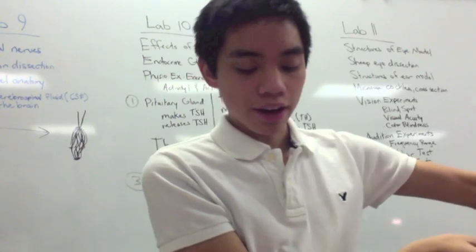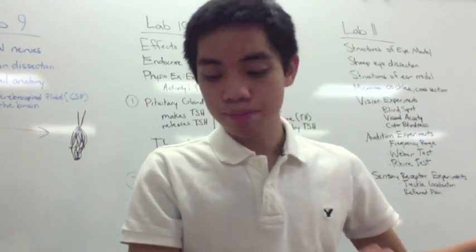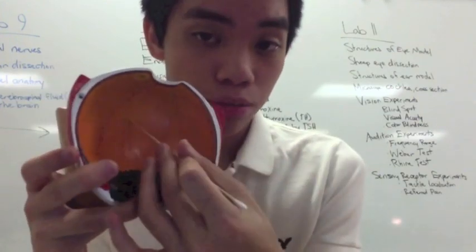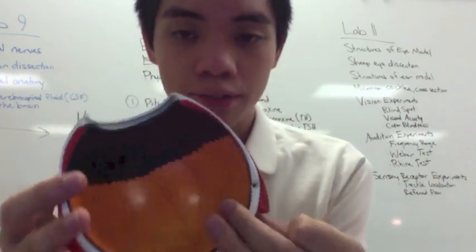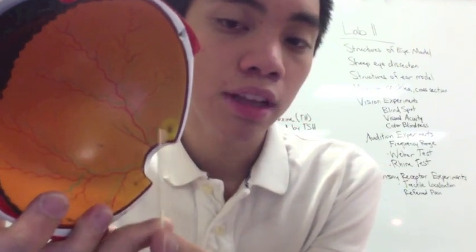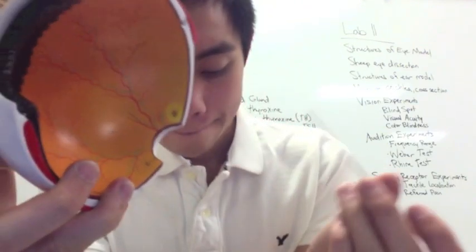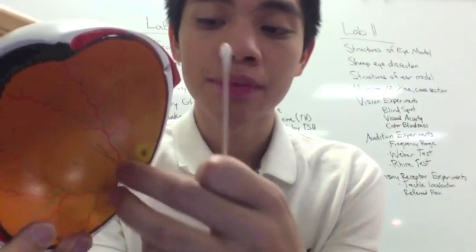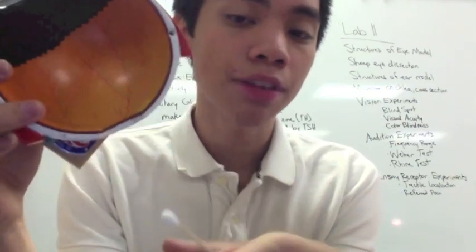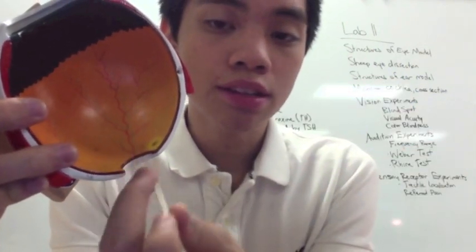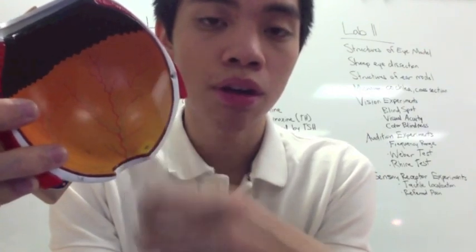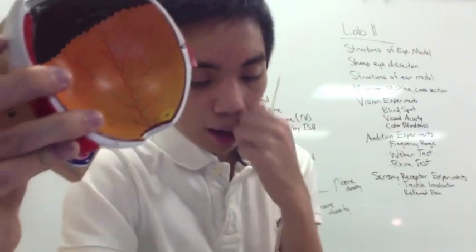Then you have the nervous layer, which is the innermost layer, composed of your retina — the orange area in the back. You have your fovea centralis, or central fovea, which is this little yellow spot where most of the light concentrates. You also have your optic disc, which is where your blind spot is, and your optic nerve, which goes to your brain.